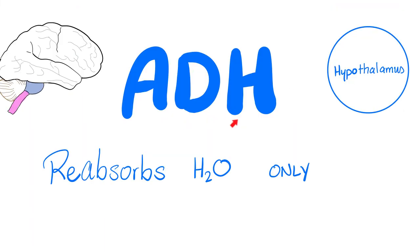Let's start with antidiuretic hormone, also known as vasopressin, also known as desmopressin, or DDAVP. ADH is secreted by the hypothalamus in your brain, and then the hypothalamus gives it to the posterior pituitary. ADH is released from the hypothalamus, goes to the posterior pituitary, and then goes to the bloodstream because it's a hormone.